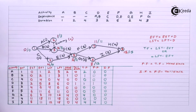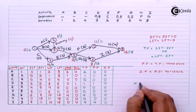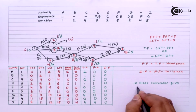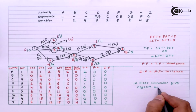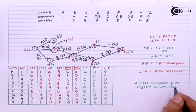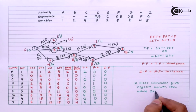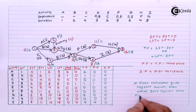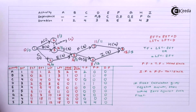If at any point any of your float calculations are negative, you have to write it as 0 because your float is a measure of time. Time cannot be negative. Therefore any negative float indicates that the float will be written as 0. This applies to total float, free float, or independent float — ignore negative values and represent them with 0.